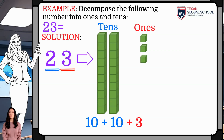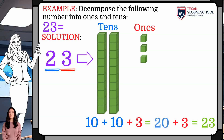This bar model method implies using 3 cubes, or 3 1s, and 2 bars of 10 1s as 10s. In this way, we can see that adding them results 23.